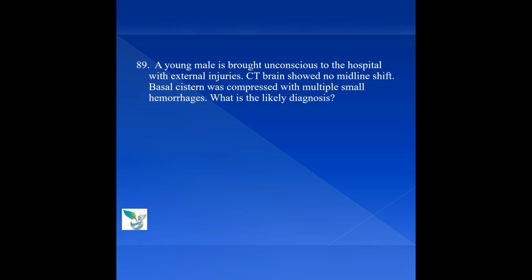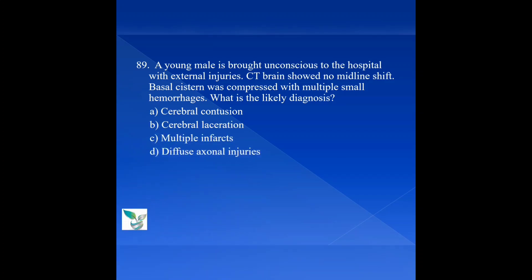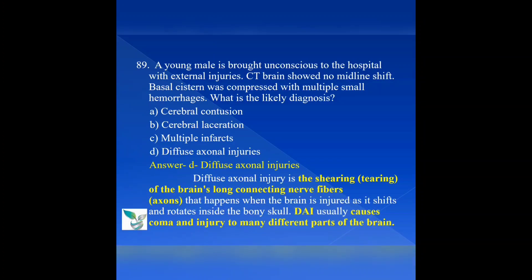Question number 89: A young male is brought unconscious to the hospital with external injury. The CT brain showed no midline shift, but the basal system was studded by multiple small hemorrhages. What is the likely diagnosis? Option A: cerebral contusion. Option B: cerebral laceration. Option C: multiple implants. Option D: diffuse axonal injuries. The answer is option D, diffuse axonal injuries. Diffuse axonal injury is the shearing or tearing of the brain's long connecting nerve fibers (axons) that happens when the brain shifts and rotates inside the bony skull, usually causing coma and injury to many different parts of the brain.